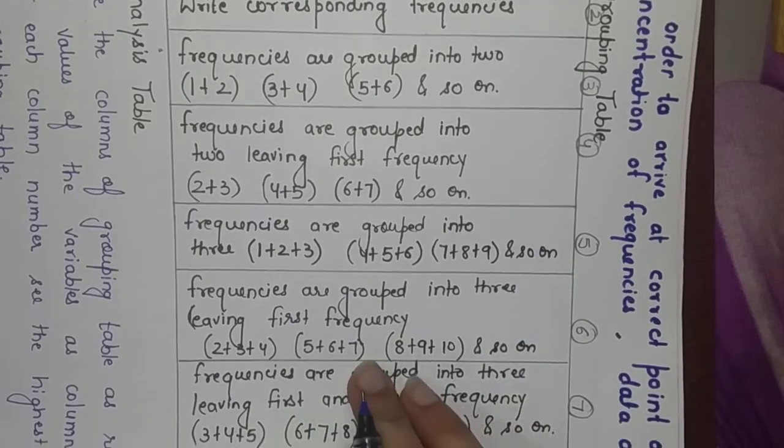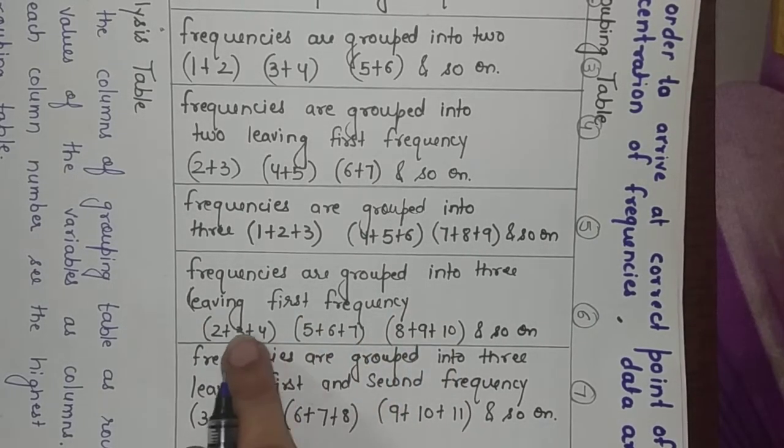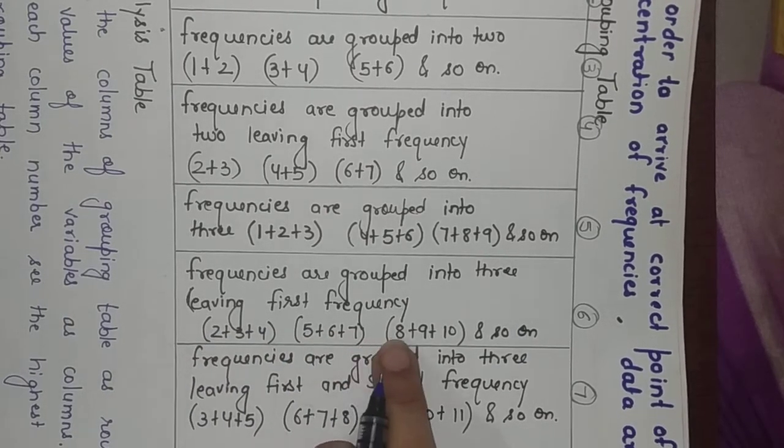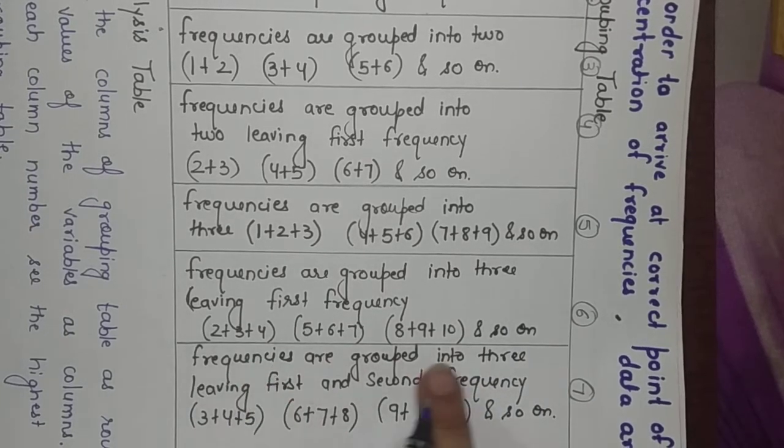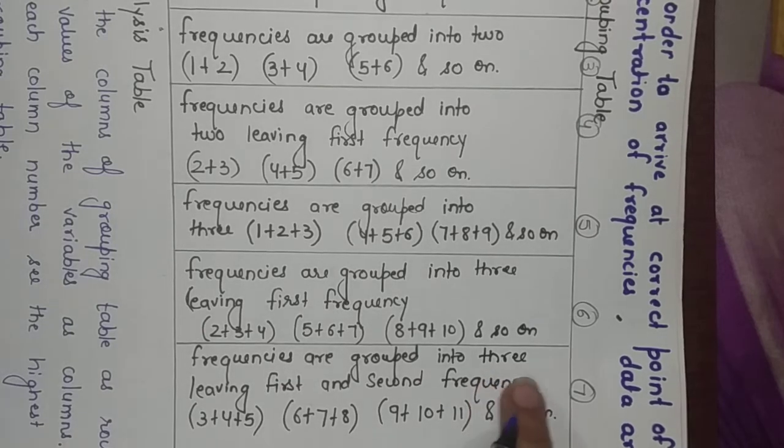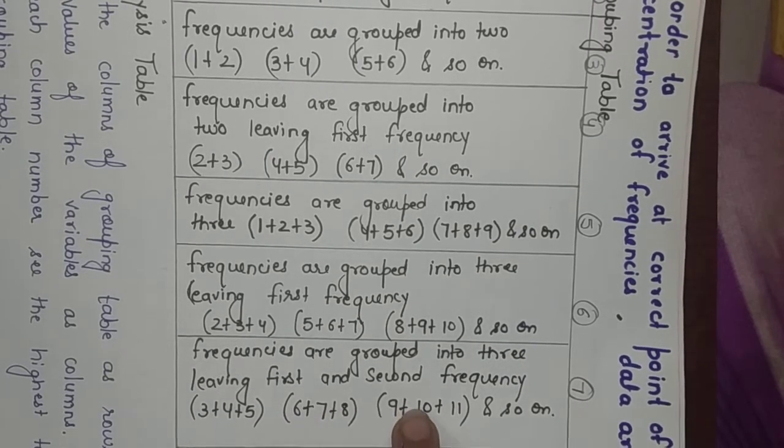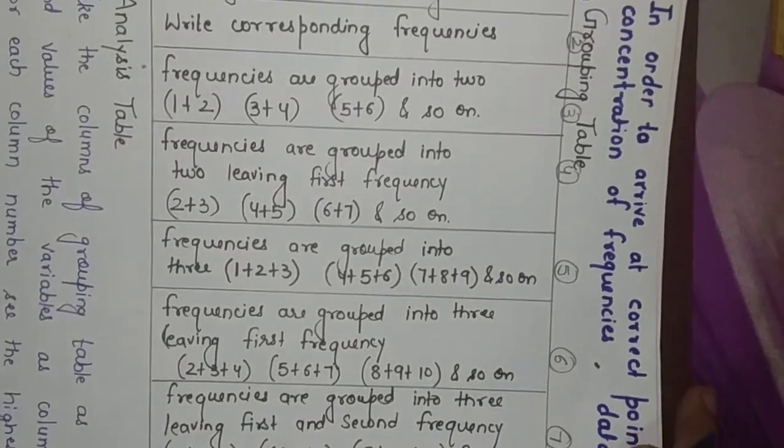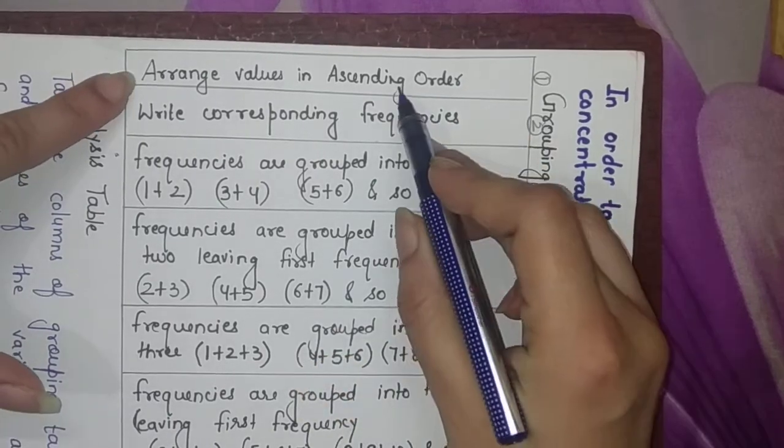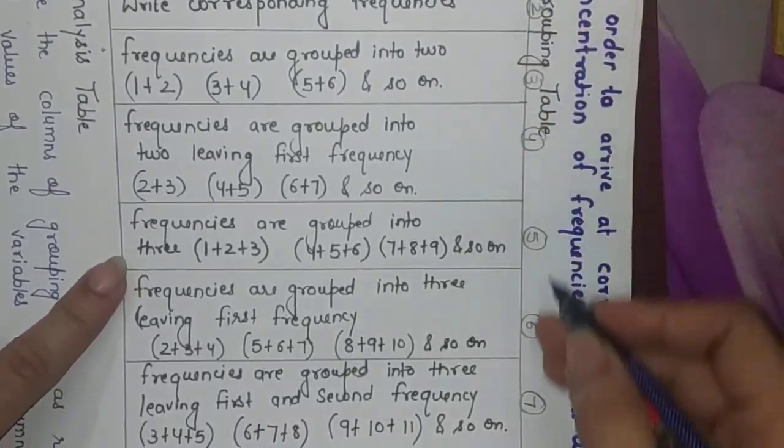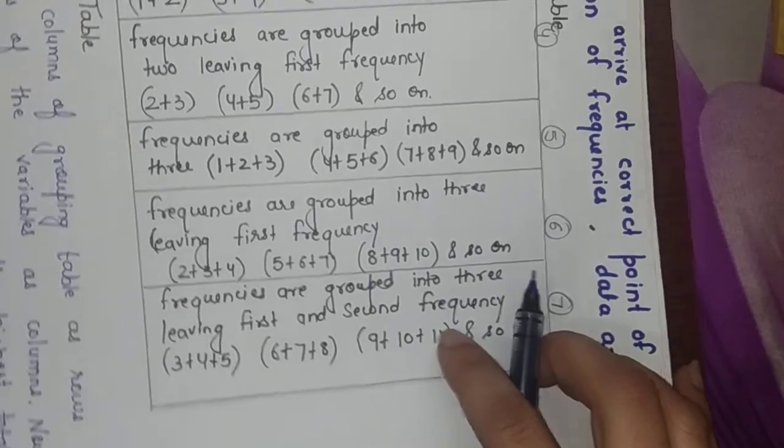After that, frequencies are grouped again into three, but this time I leave the first frequency, so second, third, fourth, then fifth, sixth, seventh, then eighth, ninth, tenth. This is the sixth column. The last column is the seventh column where I leave the second frequency and total third, fourth, fifth, then sixth, seventh, eighth, then ninth, tenth, eleventh and so on. This is how the grouping table is made.